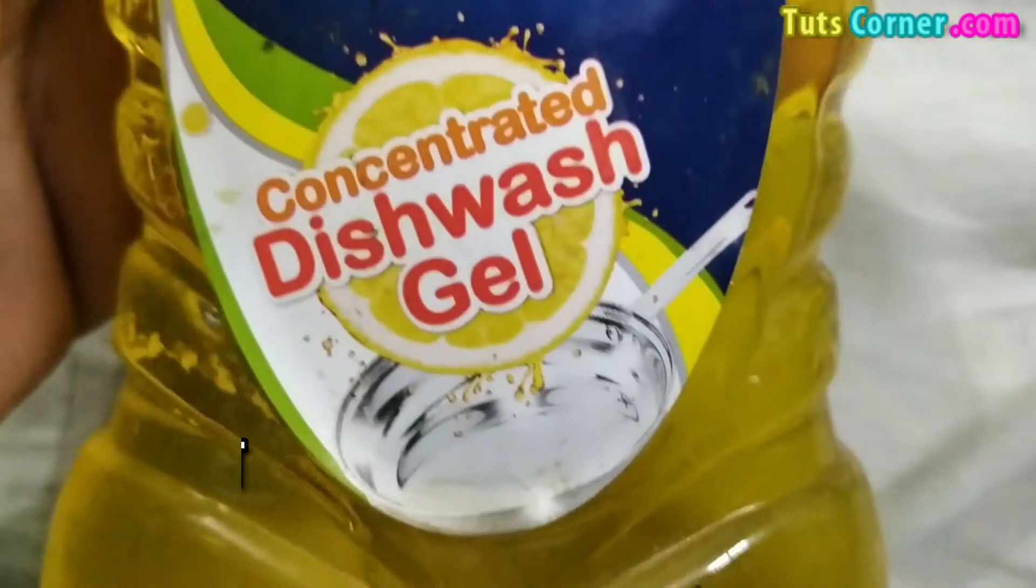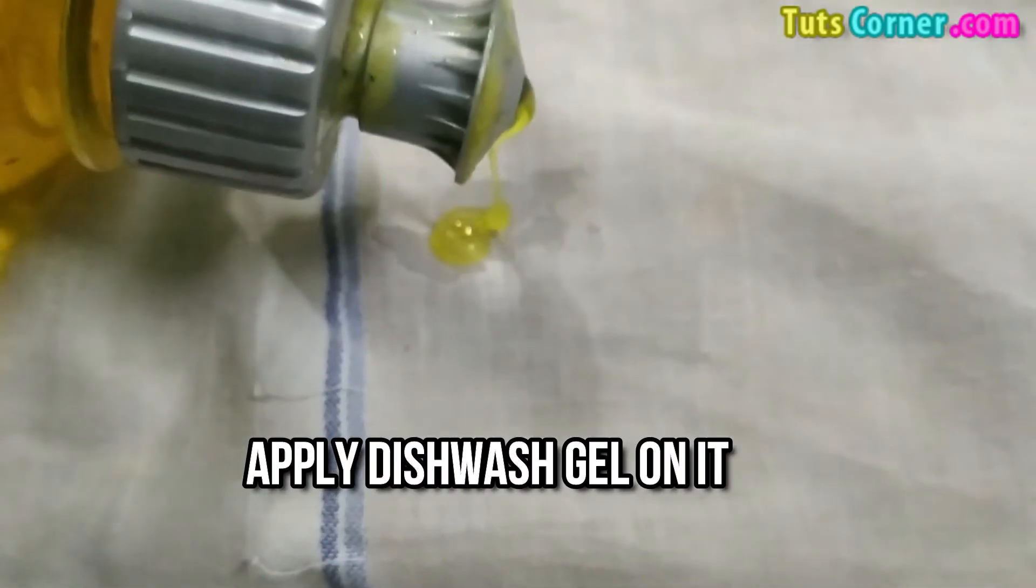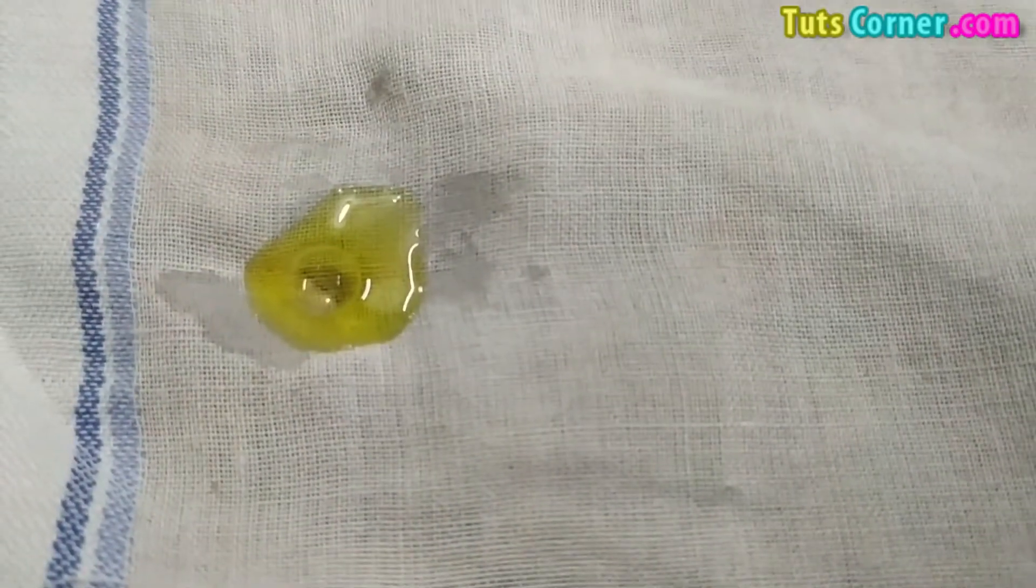When it has been dried, what you have to do is apply dishwash gel on that stain. See, here we are applying the dishwash gel on that stain like this.